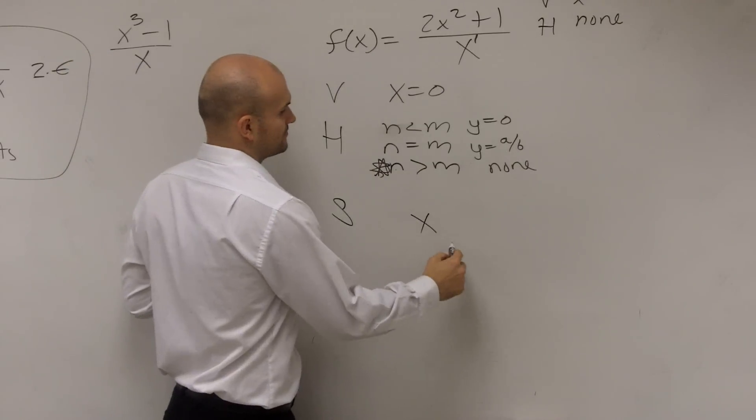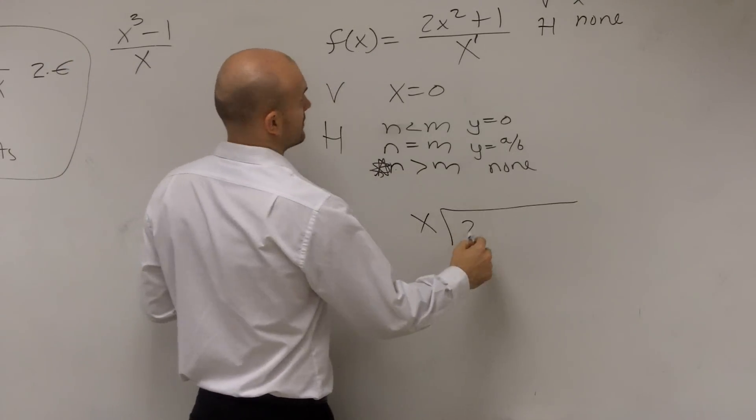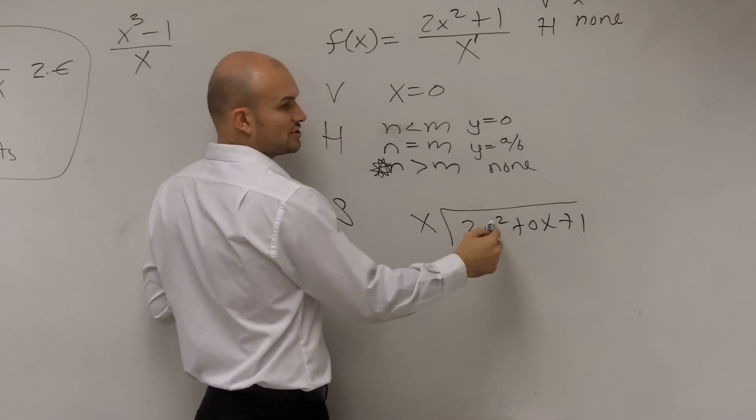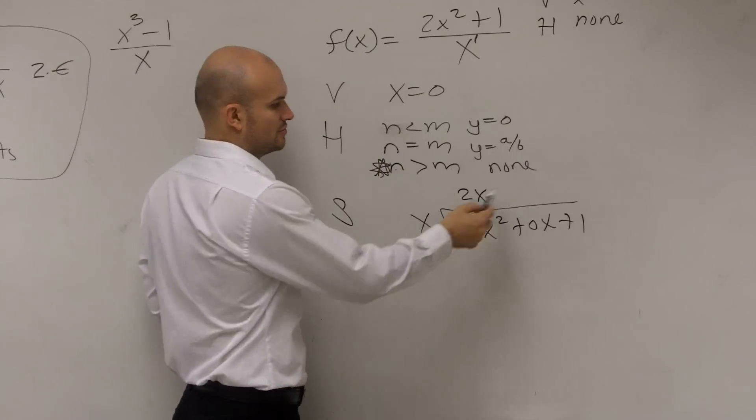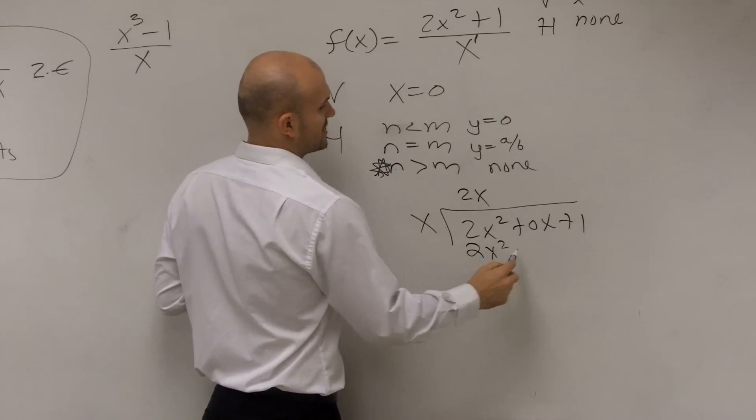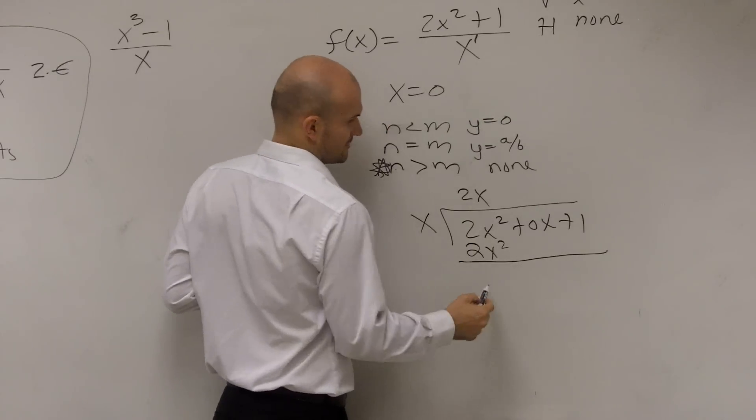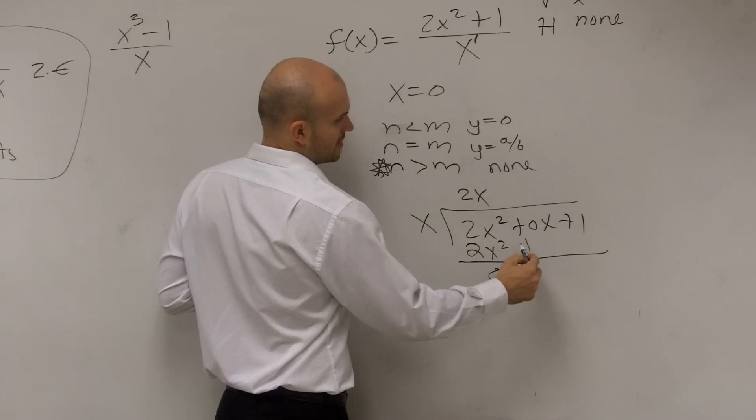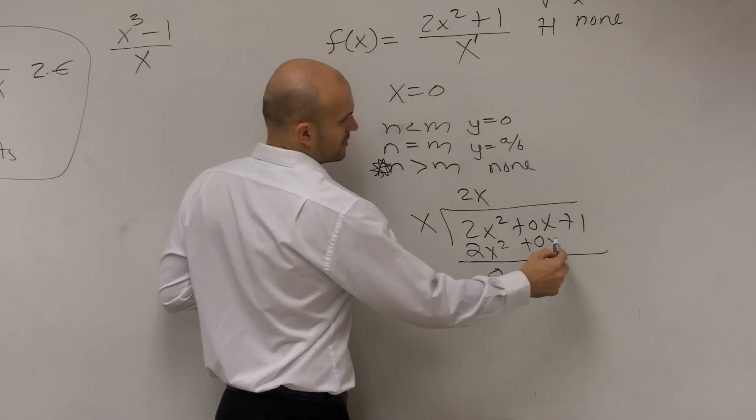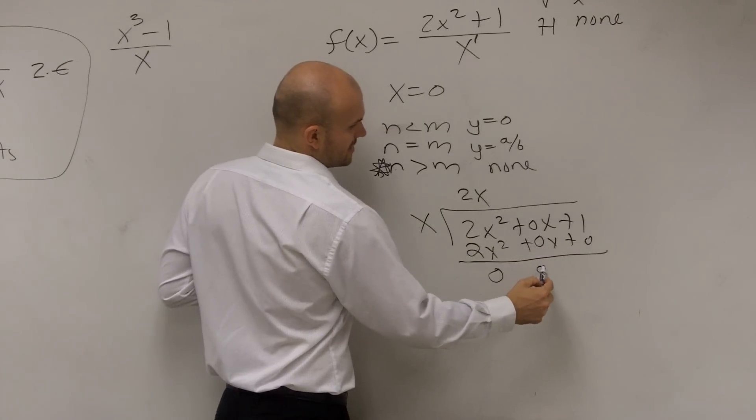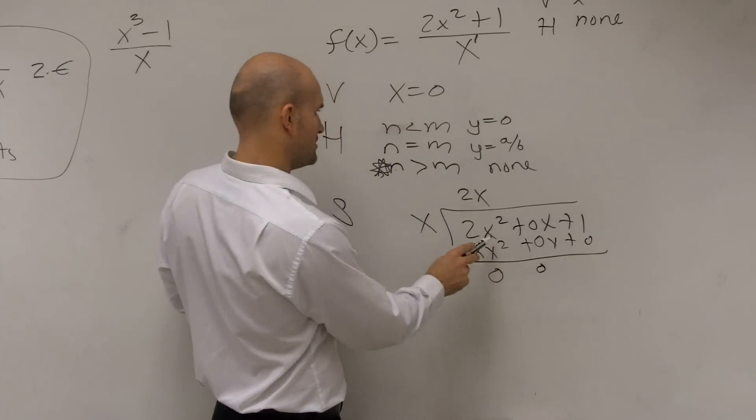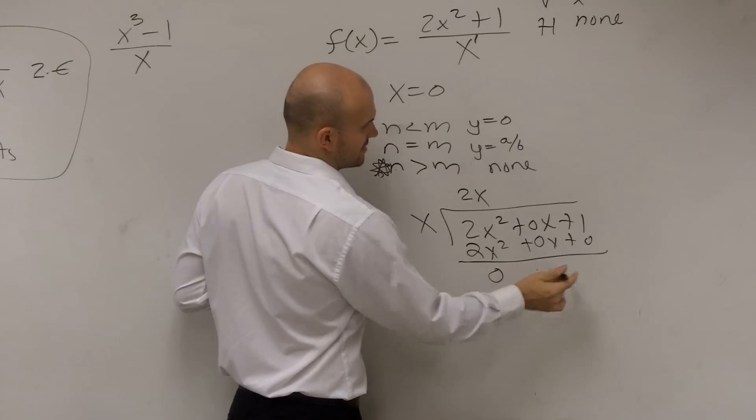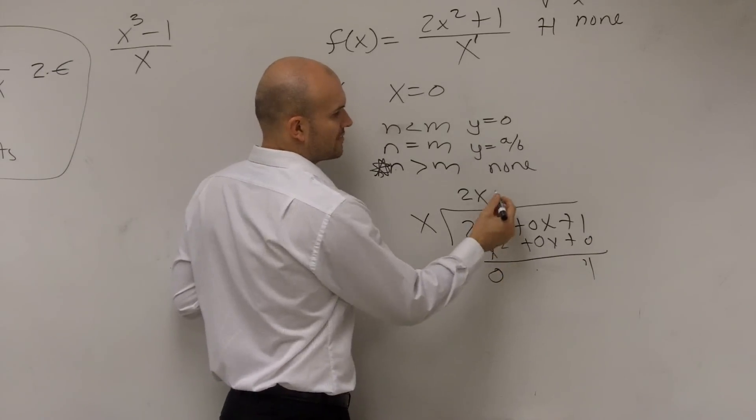To find slant, we use long division. Divide in. X goes into 2x, 2x times. 2x times x is 2x squared. That's it. So then we go, that gives us 0. Bring down plus 0x plus 0. So therefore we get, bring that down. So 0x, which is actually just going to be 0, it's not going to be there, and 1. x is not going to 1, so we have our remainder.